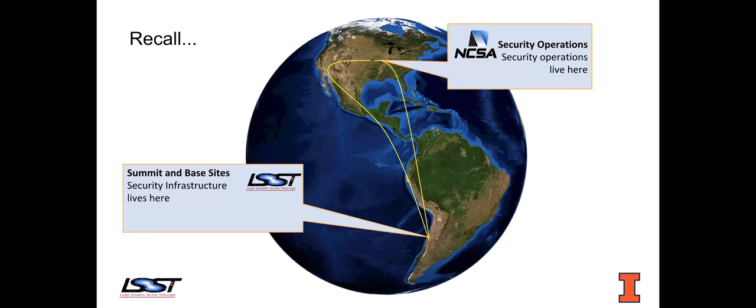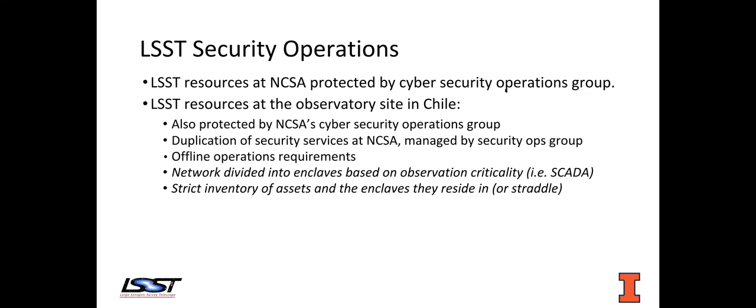The last part of the presentation covers security operations. Security operations is geographically far-flung — the infrastructure is in Chile, but operations is here at NCSA. Any LSST resources at NCSA are protected by our security operations group, and the same is true for the observatory site in Chile. We have more or less a duplication of the security services at NCSA, managed by our security operations group. It's a bit more complex though — LSST has offline computing requirements. If it gets cut off from the LAN, there are some number of days LSST is expected to continue operating without interruption, assuming the network gets repaired within that timeframe.